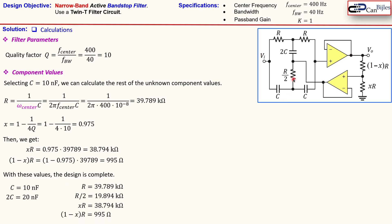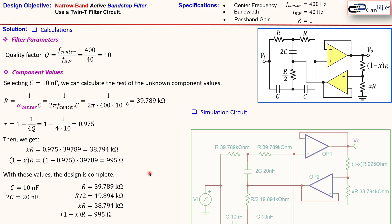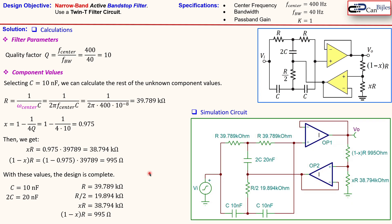The simulation circuit is shown here. You can see the resistors, and the capacitors: 20 nanofarads, 10 nanofarads, 10 nanofarads, and 10 nanofarads. There are also two operational amplifiers and the two voltage divider resistors we calculated.